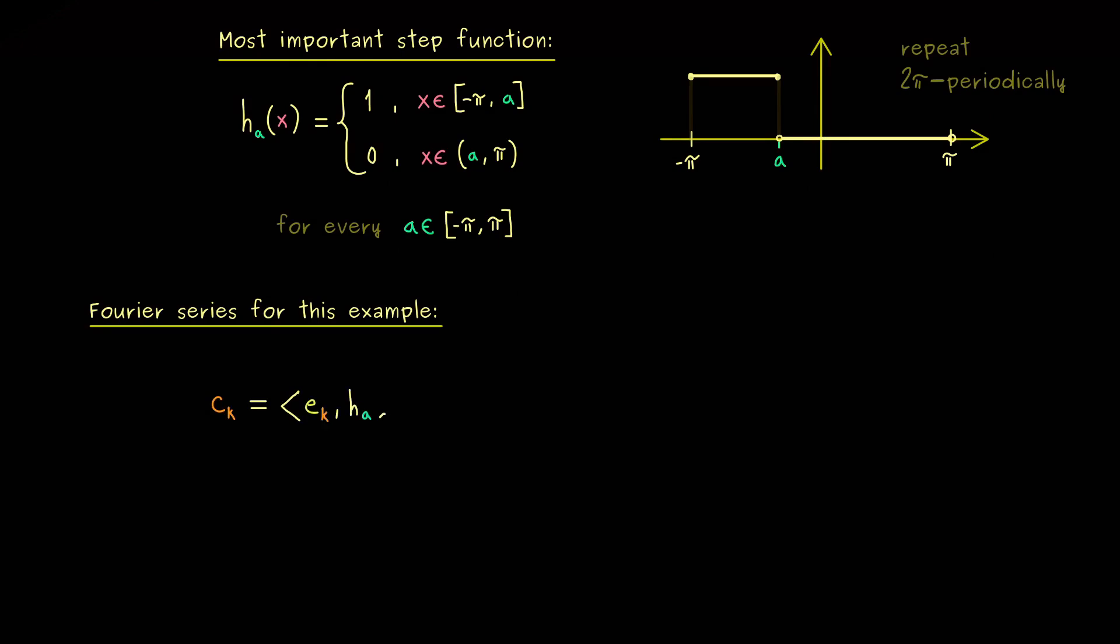what we have to do is to calculate the inner product of the basis vector e_k, combined with the function h_a. Hence, we know this is just a normal integral, where we have to integrate from minus pi to pi. And inside we have the exponential function and h_a of x. And of course, now we can use that the function h_a is 0 on the right hand side.